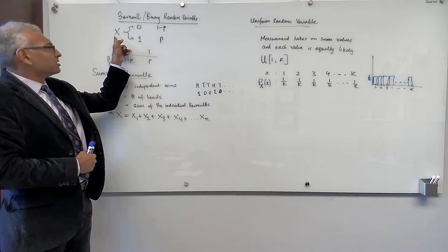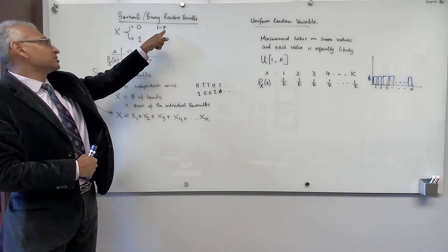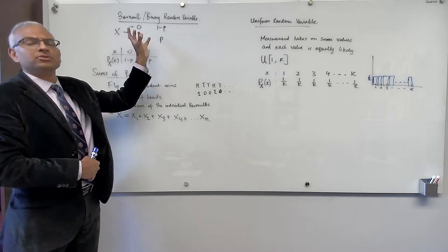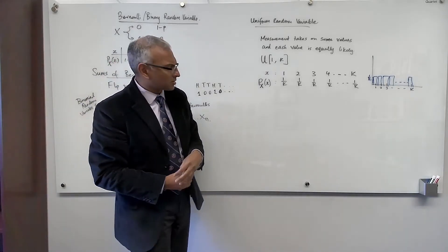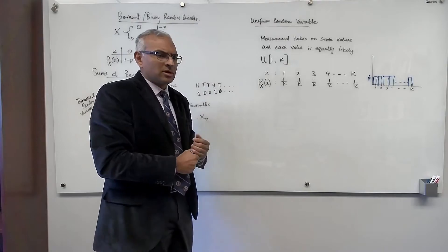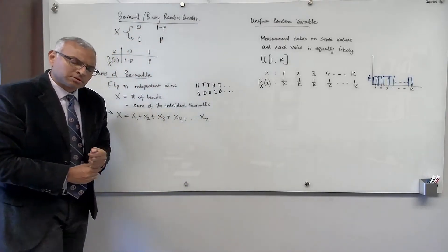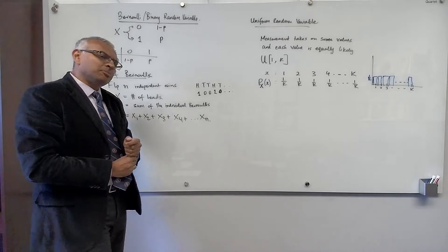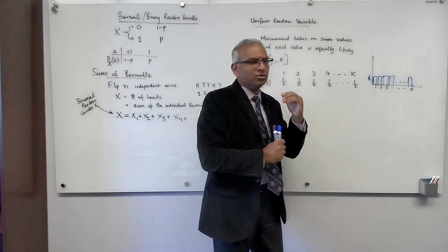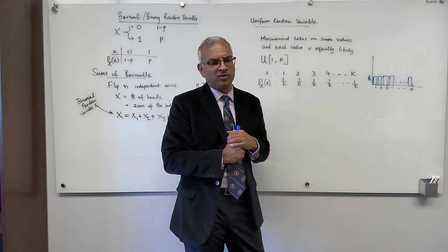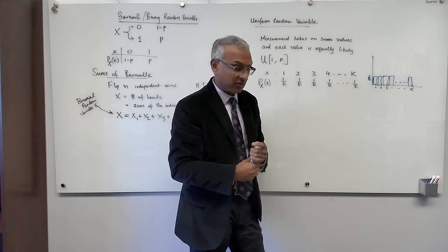If you have a Bernoulli random variable with probability of success one half, then the probability of failure is also one half, and the Bernoulli becomes an example of a uniform random variable. In general, it's rare for uniform random variables to occur naturally in practice — usually we use them when we develop algorithms.